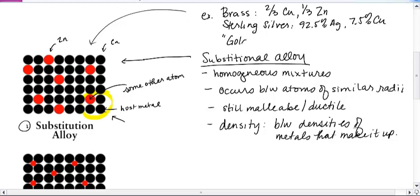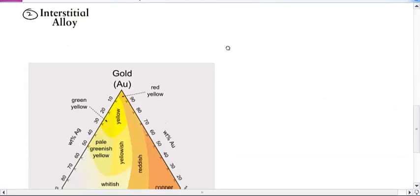And gold, I'm going to put that in quotes here, because gold is a substitutional alloy between gold and silver and copper. And when I say gold, I'm referring to the gold you might have in jewelry. So let me just show you with gold.